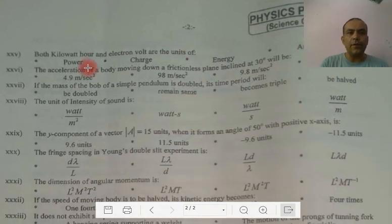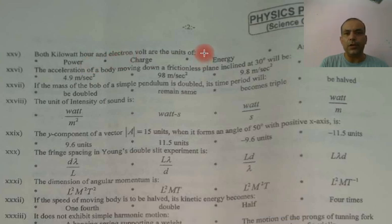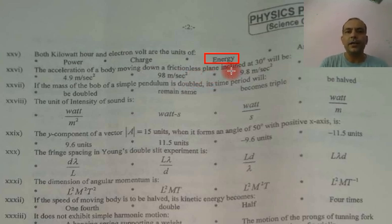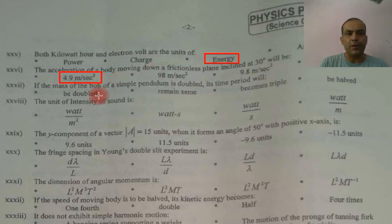Both kilowatt-hour and electron volt are units of energy. Acceleration of a body moving down a frictionless inclined plane: the formula is g sin θ. With g = 9.8 and sin 30° = 0.5, we multiply 9.8 by 0.5, giving 4.9 meters per second squared.